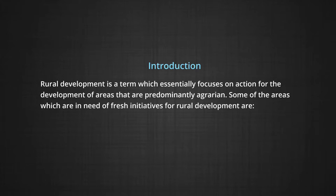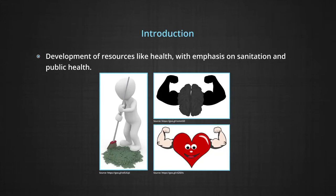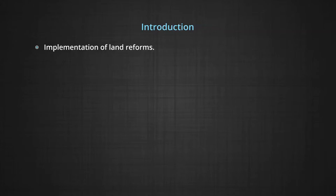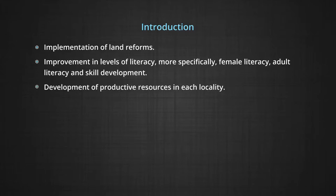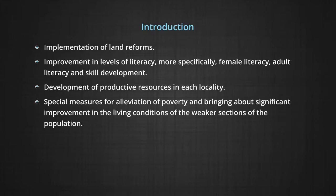Some of the areas which are in need of fresh initiatives for rural development are: number one, development of resources like health with emphasis on sanitation and public health; two, implementation of land reforms; three, improvement in the levels of literacy, more specifically female literacy, adult literacy and skill development; four, development of productive resources in each locality; five, special measures for alleviation of poverty and bringing about significant improvement in the living conditions of the weaker sections of the population.